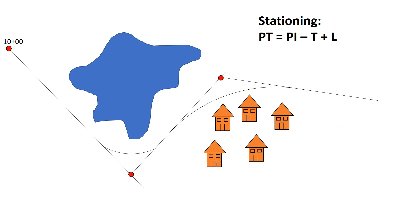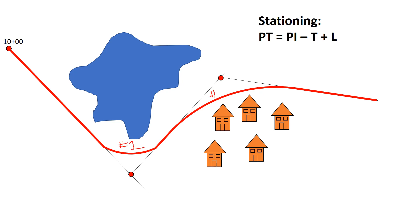Moving away from the busy diagram, we can show what that alignment actually looks like. The stationing is represented by the red line — going along curve number one and then curve number two throughout the final alignment. This is what the road you're designing would actually look like. To summarize: the station of the PT equals the PI minus the tangent length T, which gives us the PC station, and then we add the length of curve L to reach the PT.